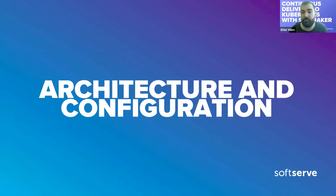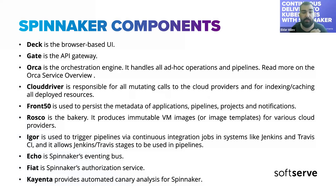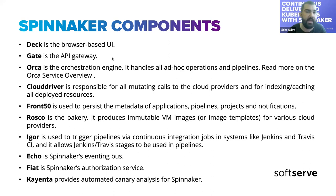Let's take a look at the architecture to understand how it works inside. Spinnaker is a distributed system — you can install it as a standalone, but the recommended way in Kubernetes is the distributed way. It has many different services. The most important are Deck and Gate. Deck is the UI container. Gate is the API gateway server — it routes all traffic to the rest of the services and responds with summarized data. All API calls from the UI go across the different services and bring the final response.